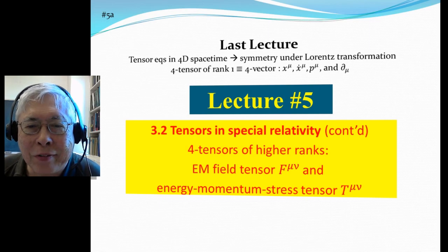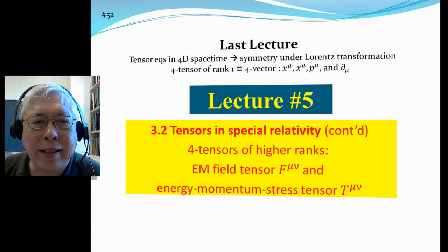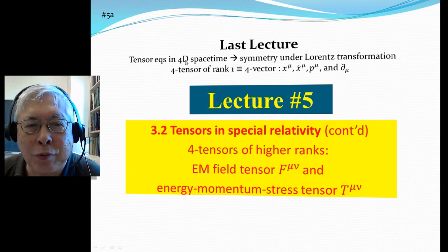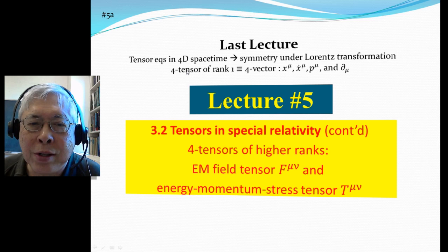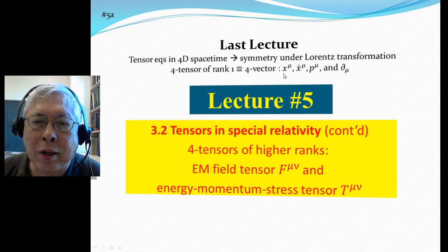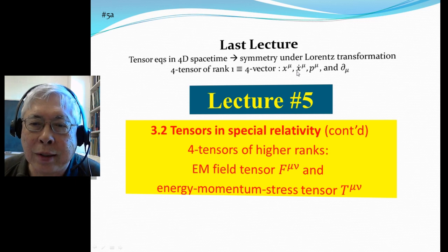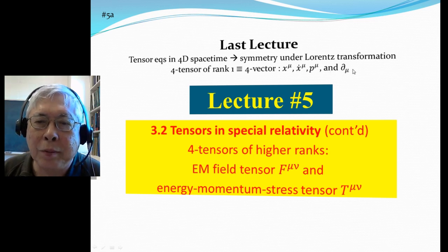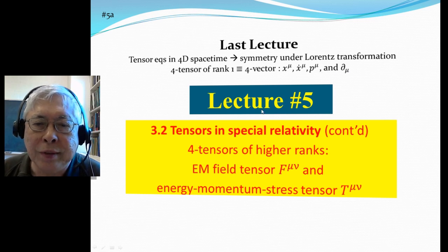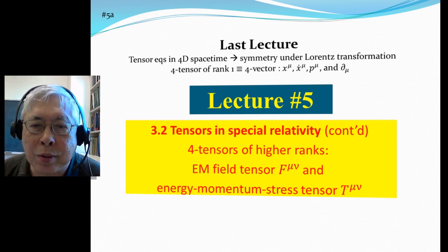We're at the fifth lecture, it should be the beginning of the third week. In the last lecture we talked about writing tensor equations in four-dimensional space-time. Those equations are automatically symmetric in Lorentz transformations, so therefore they're relativistic. Four-dimensional tensors of rank one, which means one index, are really just four-vectors. In this lecture we're going to go to tensors with two indices, rank two.